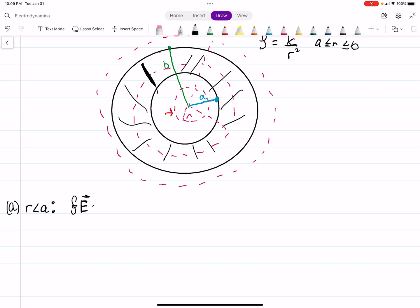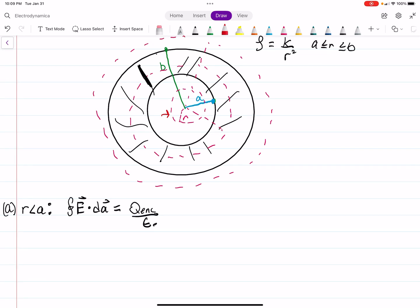and say E dot DA, the integral of that, is equal to the enclosed charge over epsilon naught. The enclosed charge is zero. So then, the electric field, the magnitude of it, is just zero.